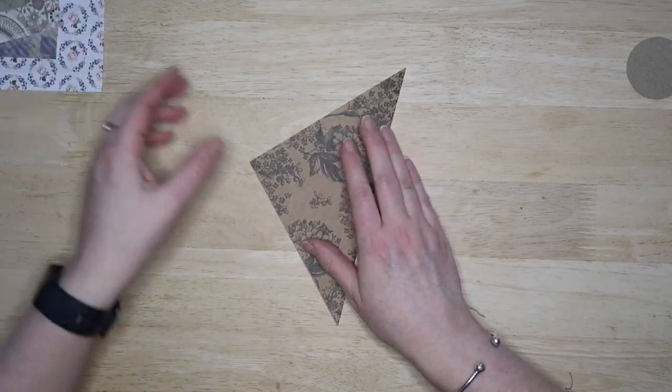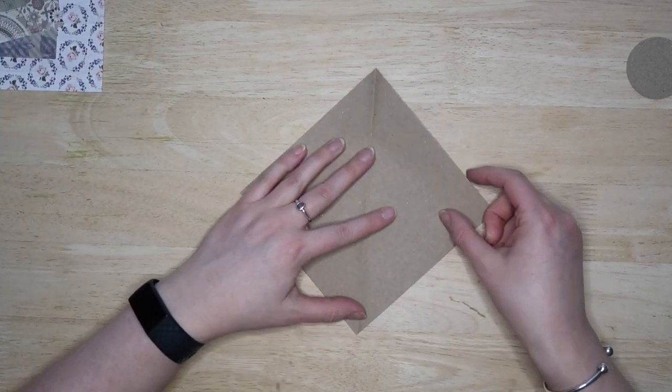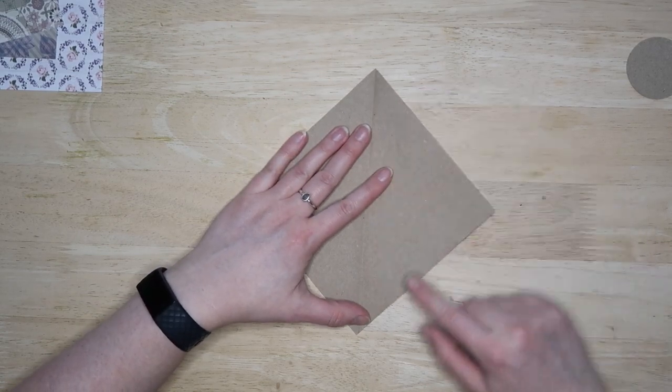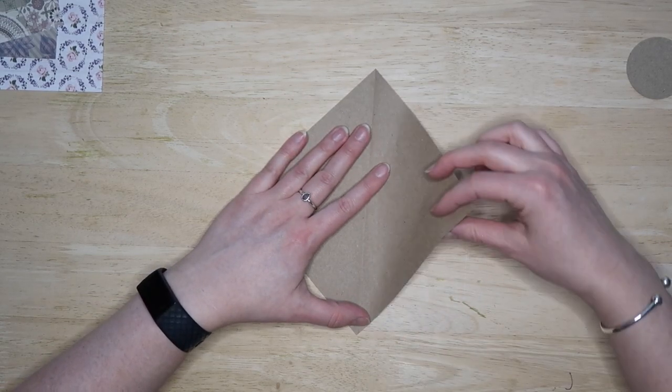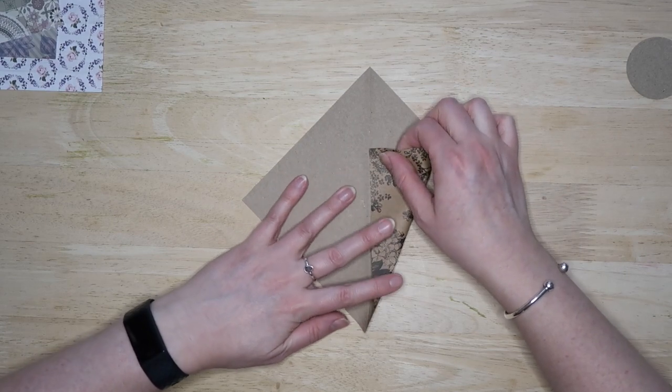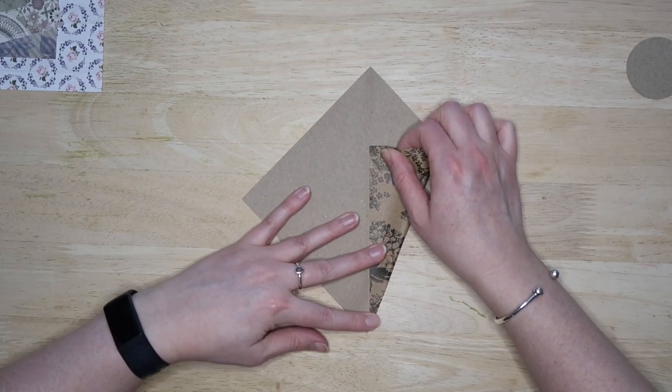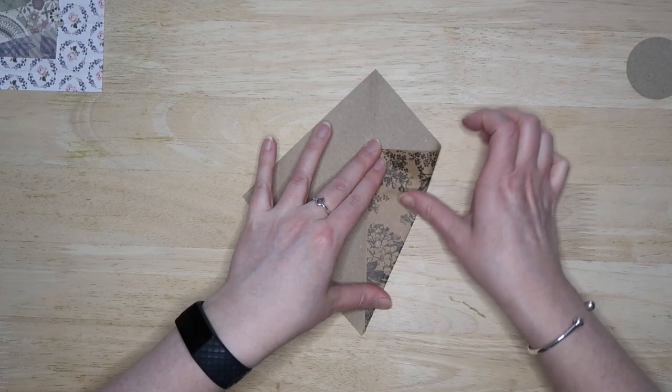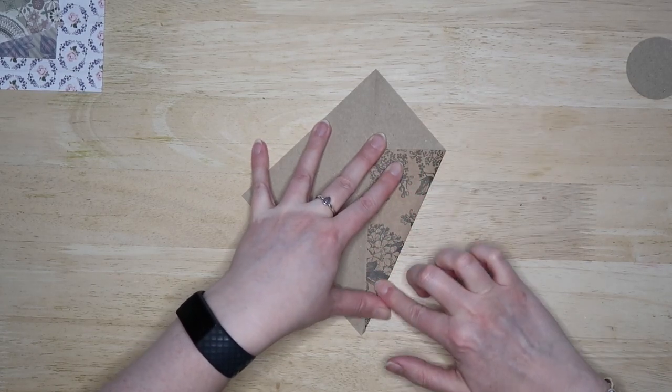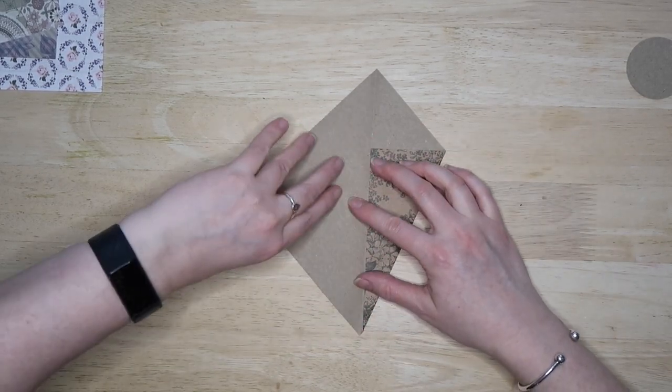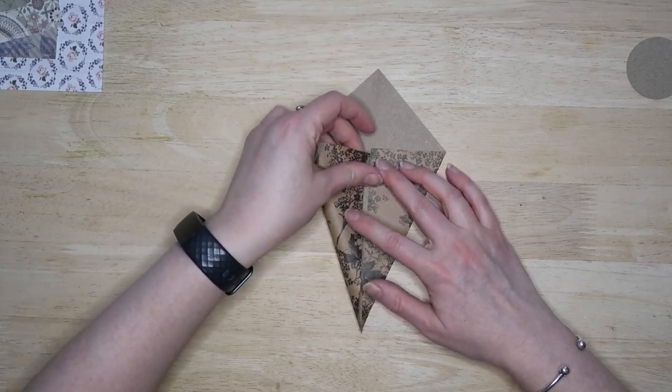So we are folding on the diagonal and then we're going to fold this line in line with the center so that we're starting to make a kite shape. And then again on the other side.